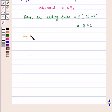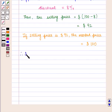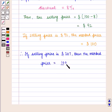Now if selling price is $92, the marked price is equal to $100. Therefore, if selling price is $207, then the marked price is equal to $20,700 upon $92.